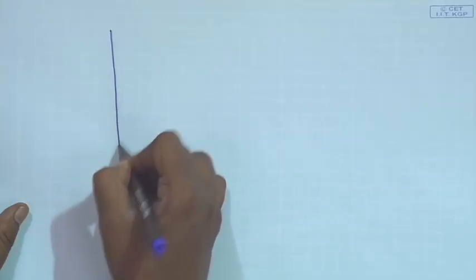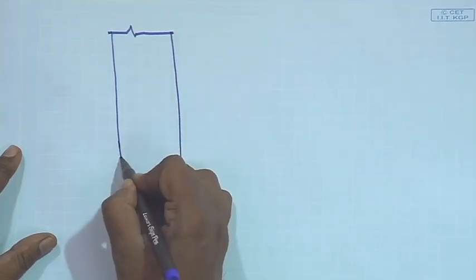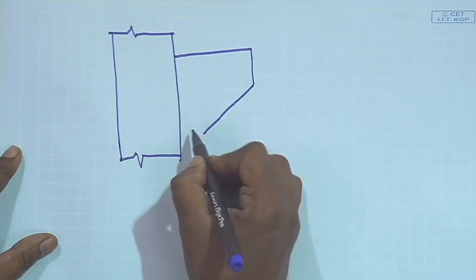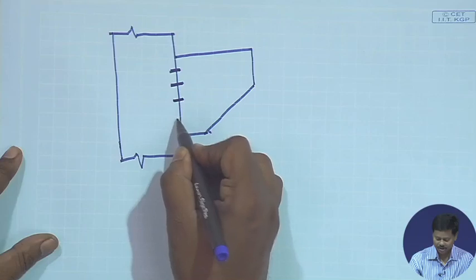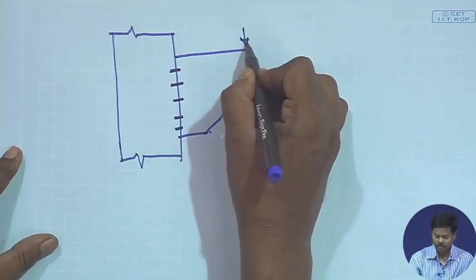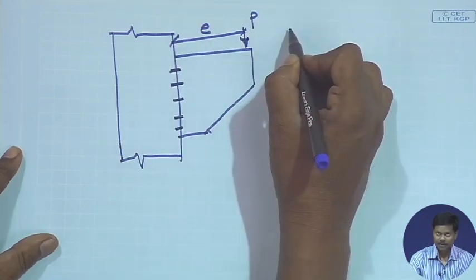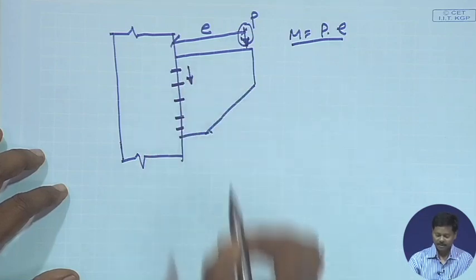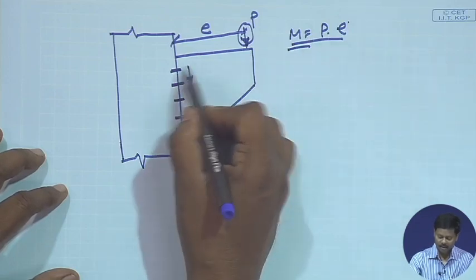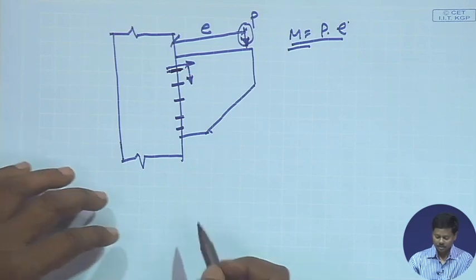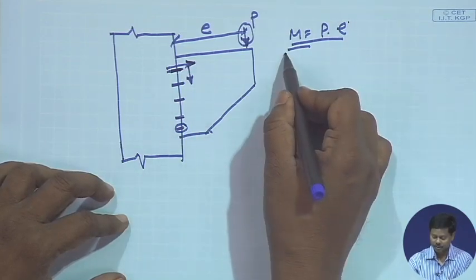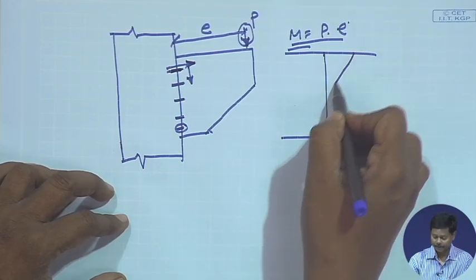If we draw the diagram, say a bolt group is connected with a certain bracket connected here, and we have the bolt group at different positions. A load of magnitude P is acting at a distance E, so the moment will be P into E. Because of P, the shear stress will develop in this direction and because of this moment, a tensile force will come in this direction. In the top portion there will be tensile force and in the bottom portion there will be compressive force.